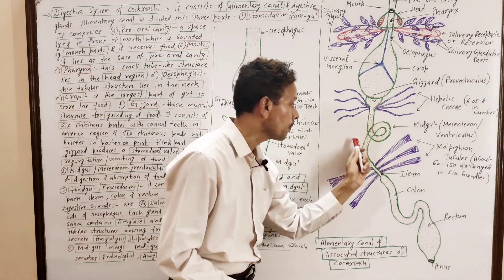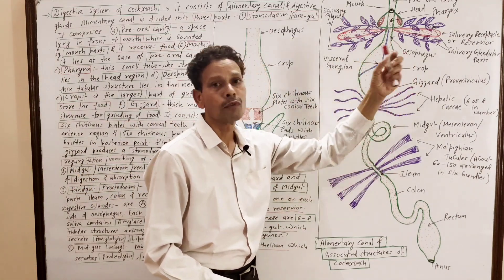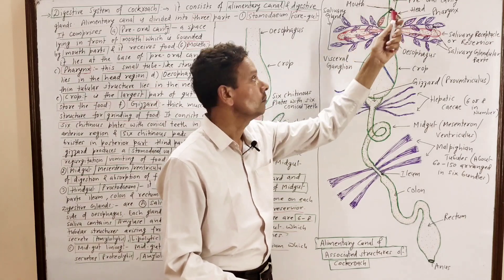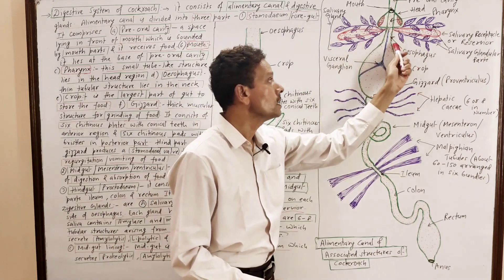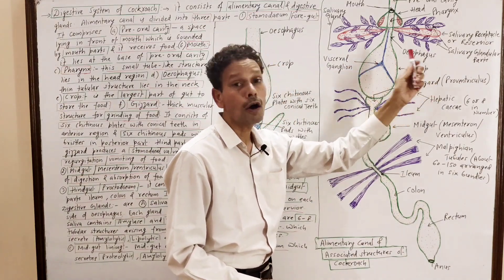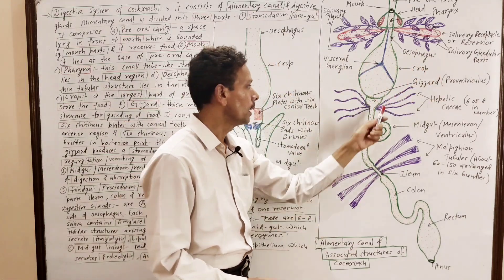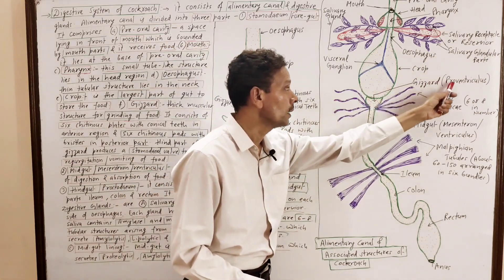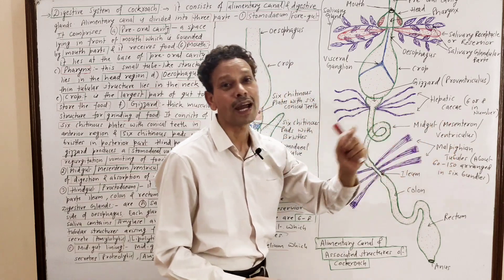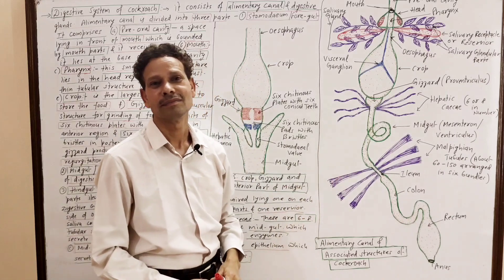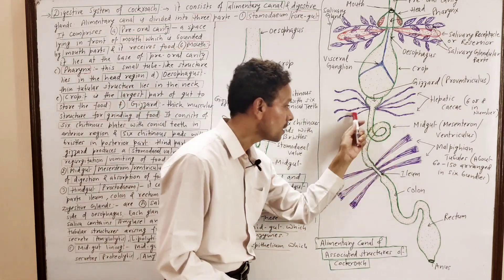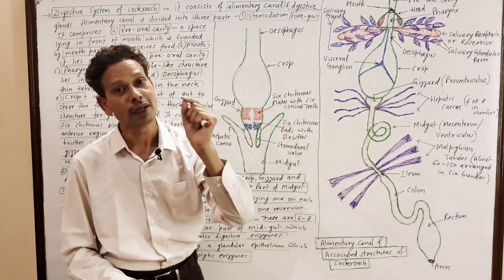The next part of the alimentary canal is the midgut, also called the mesenteron or ventriculus. To recap the foregut (stomodeum): its parts are the preoral cavity, mouth, pharynx (in the head region), esophagus (in the neck region), crop (the widest and longest part for food storage), and gizzard (proventriculus). The midgut involves in the digestion and absorption of food — it is the main part of the alimentary canal where digestion and absorption take place.